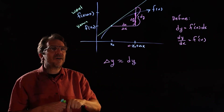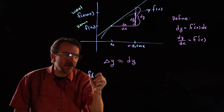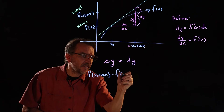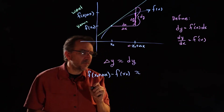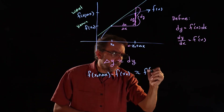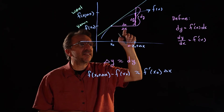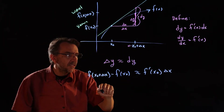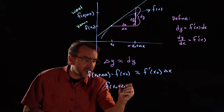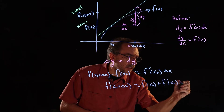Once we establish that delta y is approximately equal to dy, we're home free. Delta y is f of x naught plus delta x minus f of x naught, approximately equal to dy, which is f prime of x naught times delta x. Adding f of x naught to both sides gives us: f of x naught plus delta x ≈ f of x naught plus f prime of x naught times delta x. That's the formula we used.